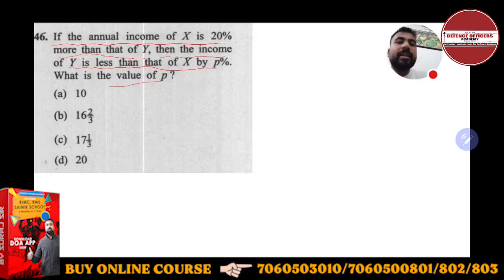It is very simple. You have to understand in this way: the annual income of X is 20% more than Y. To get the percentage, you can take any value since options are given in percentage. So if annual income of X is 20% more than Y, and if you take Y equal to 100, then X automatically becomes 120.